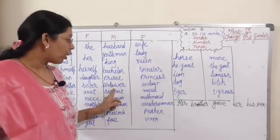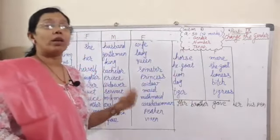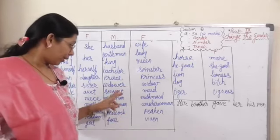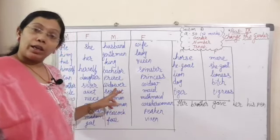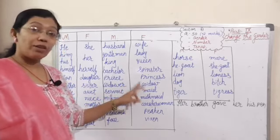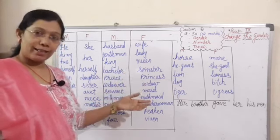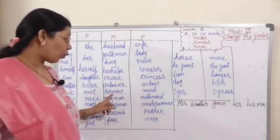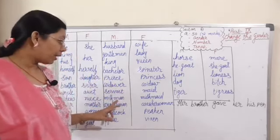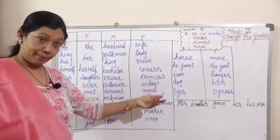Prince means Rajkumar — princess means Rajkumari. Widower means Vidhur — the man whose wife has died. For the feminine gender, widow is used — a lady whose husband has died. Servant — maid. Milkman — milkmaid.